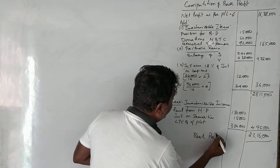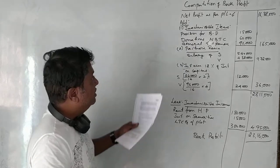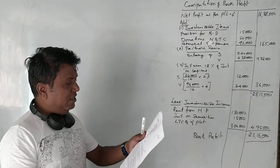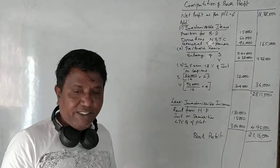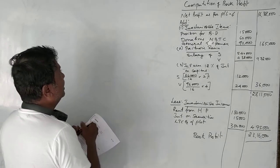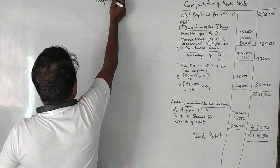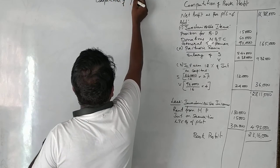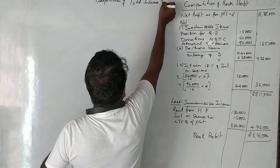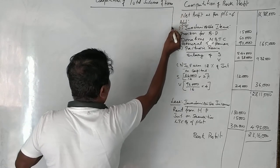We have completed the first step — computation of book profit. After computing book profit, the next step is to calculate total income of the partnership firm and then the tax liability.